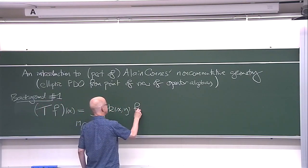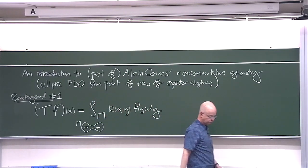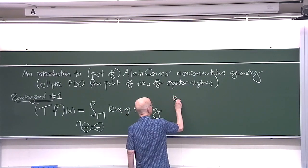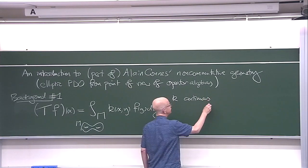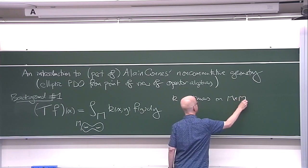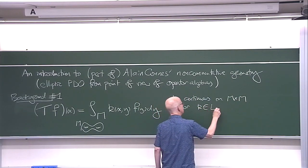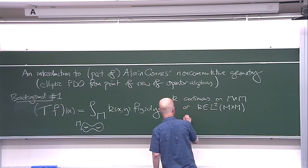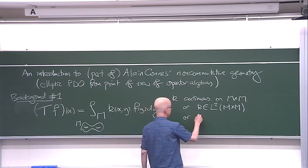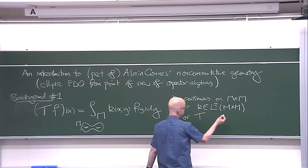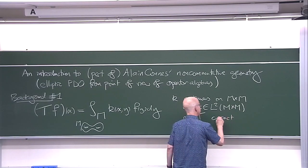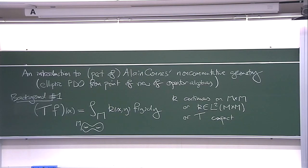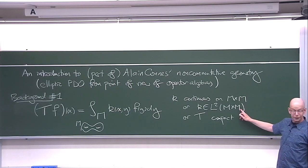The theory of these operators depends very much on the behavior of K. At the beginning, people investigated continuous functions, and a little later it was decided that a square integrable function would be okay. A little later still, a further generalization was found to be best. There's a way of characterizing this type of operator, plus a few more, and that's the condition of compactness — so-called compact operators on Hilbert space.